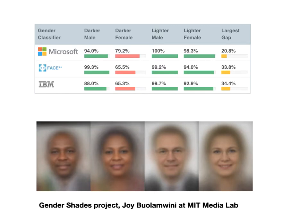Joy Buolamwini at the MIT Media Lab really raised attention to this. She's a researcher there and she discovered this problem when she was not recognized by her Xbox, which also uses image recognition and facial recognition to detect a human present. The Xbox lets you interact with it through the camera using gestures, but it needs to identify a human face first. That's a problem if you have dark skin and the algorithm doesn't see you as human.